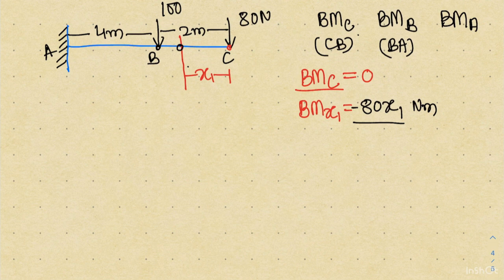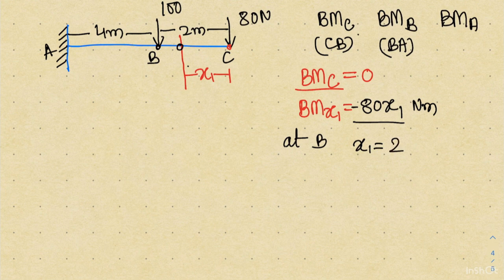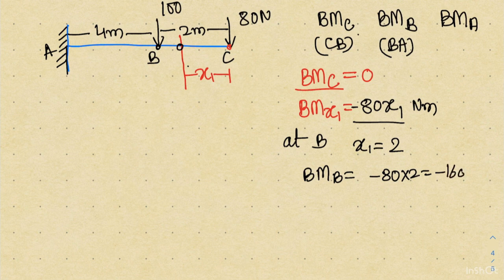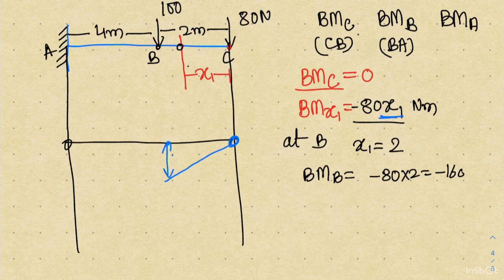This x1 equation is valid only up to point B, not beyond, because beyond B the 100 Newton load also comes into the picture. At point B, x1 equals 2, so the bending moment at B is minus 80 into 2, which is minus 160 Newton-meter. Drawing the diagram: at C the bending moment is 0, it varies linearly to point B where it reaches minus 160 Newton-meter.